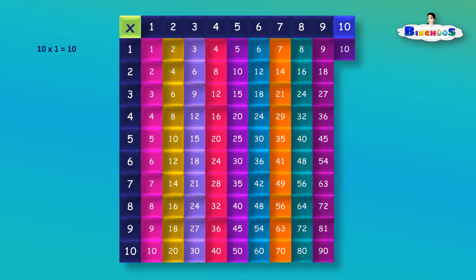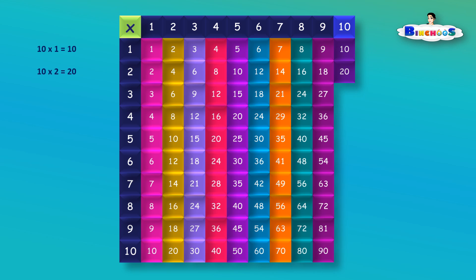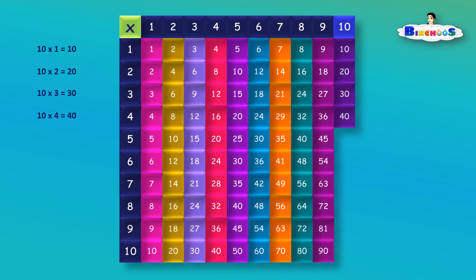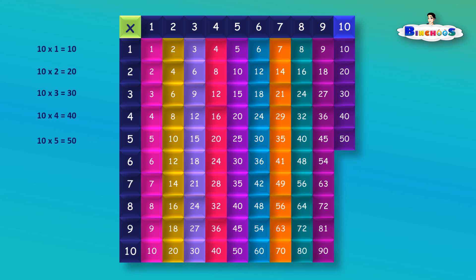10 times 1 is equal to 10. 10 times 2 is equal to 20. 10 times 3 is equal to 30. 10 times 4 is equal to 40. 10 times 5 is equal to 50. 10 times 6 is equal to 60.